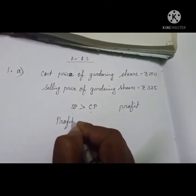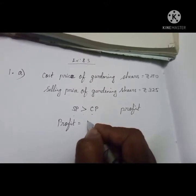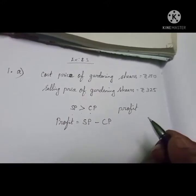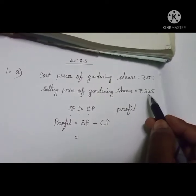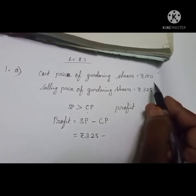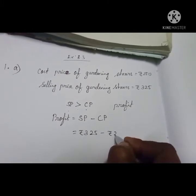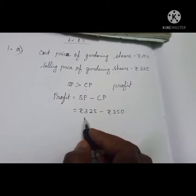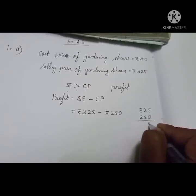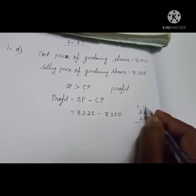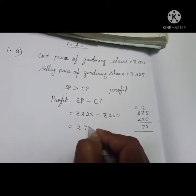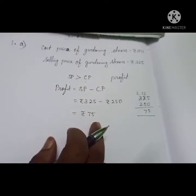If SP is greater than CP, there will be profit. What is the formula to find the profit amount? Profit is equal to selling price minus cost price. Selling price is rupees 325, cost price is rupees 250. So, 325 minus 250 equals rupees 75, which is the profit amount.